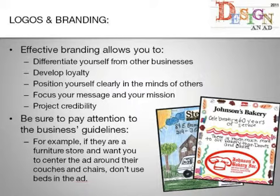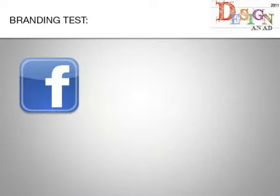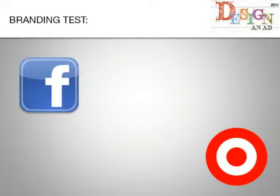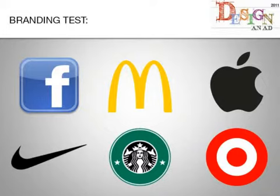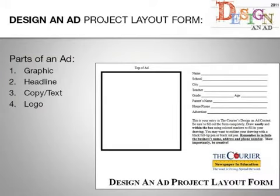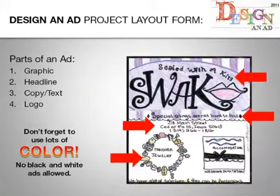Now let's test how well you know the following logos and brands. Name the logos as they appear on the screen. If you are able to correctly guess all six logos, good job. These businesses' logos are easy to recognize because they do a really good job of marketing and advertising their brand. Now let's go over the design and ad project layout form. When designing your ad, it's important to include the following four things: number one, a graphic; number two, a headline; number three, copy or text; and number four, their logo. The design and ad below includes all four parts of an ad — can you find and name each part?